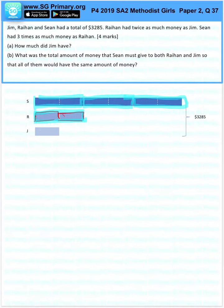Which means total 9 units equals to $3,285. 1 unit is $3,285 divided by 9, which is $365. This is the answer for A.